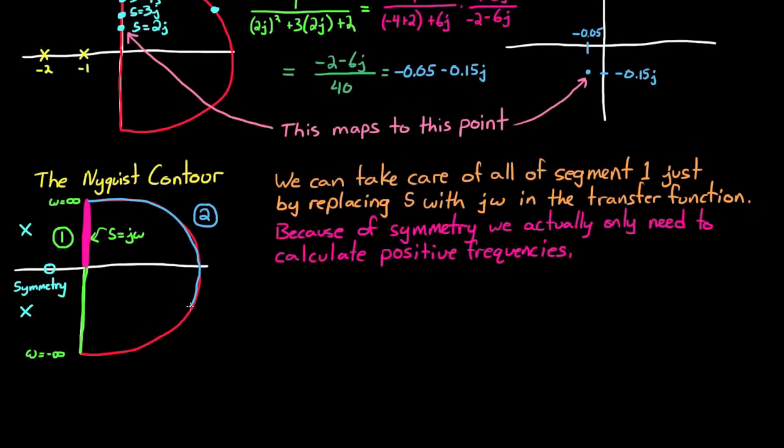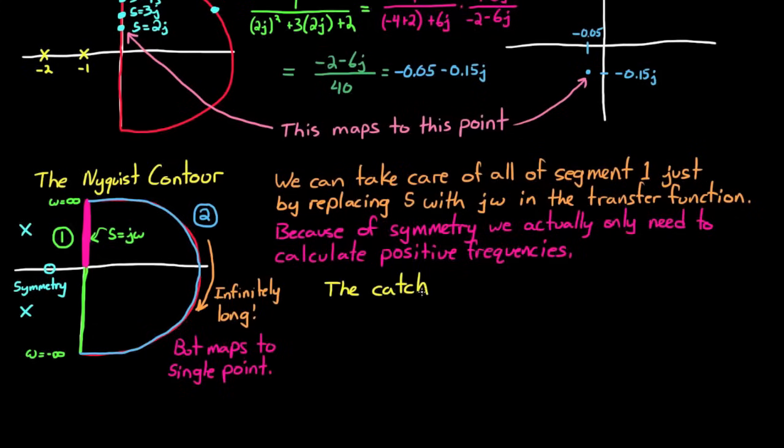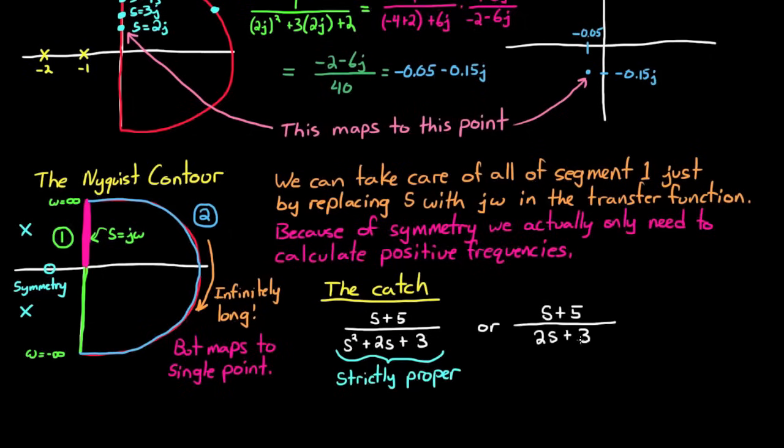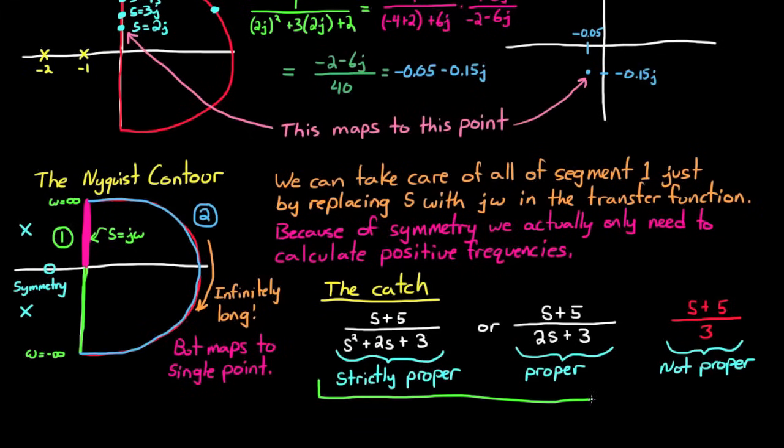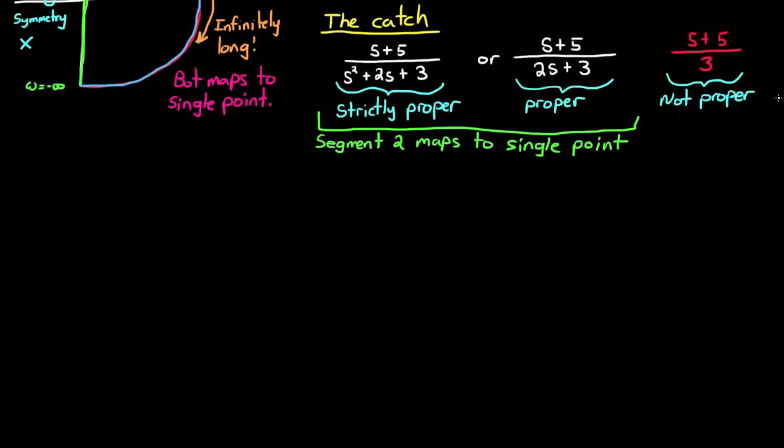The second piece starts at infinity on the imaginary axis, loops around to infinity on the real axis, and then finally negative infinity on the imaginary axis again. I think this segment is pretty interesting because despite the fact that it is infinitely long, the entire segment maps into a single point in the w plane. But there is a catch. It maps to a single point only if the denominator of your transfer function is higher order than the numerator, and this is called a strictly proper transfer function, or if it's equal order to the numerator, called a proper transfer function. If the numerator is of higher order than the denominator, this is not a proper transfer function. The second segment maps to a single point for only the first two and not the last, but that's okay because all physically realizable systems are either proper or strictly proper transfer functions.